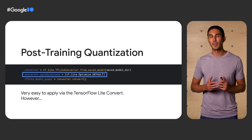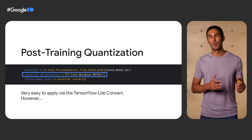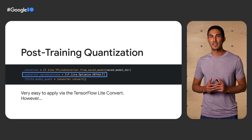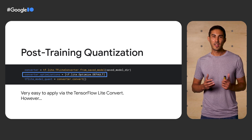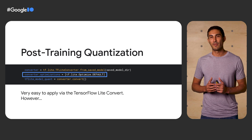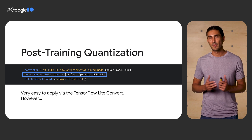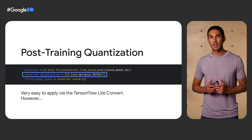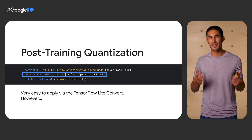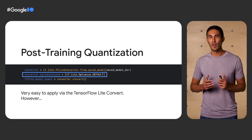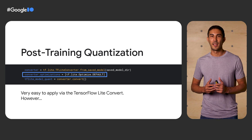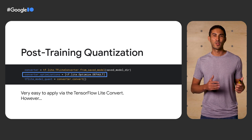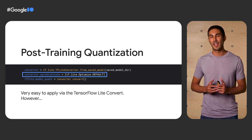One technique the model optimization toolkit provides is post-training quantization. As the name implies, it is applied to the model after training. There are a variety of quantization schemes to choose from, and as you can see from the code, it's quite straightforward to apply. The converter will apply the chosen optimization technique; however, it's up to Sam as the model author to verify improvements to model size and performance, and also to understand how model accuracy is affected and whether the tradeoff was worth it.